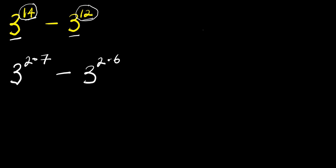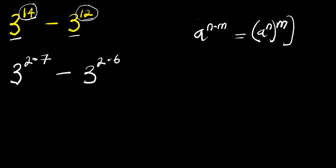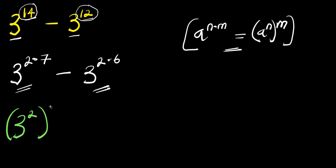Now if you have a to the power n times m, that equals a to the power n, all raised to the power m. We apply this identity here and here, so what we get is three to the power two, raised to the power of seven, minus three to the power two, raised to the power of six.